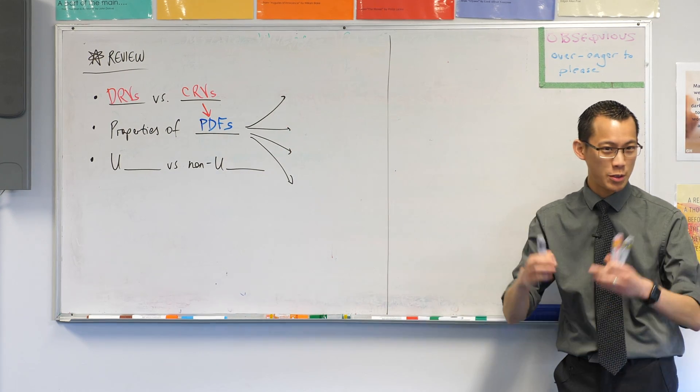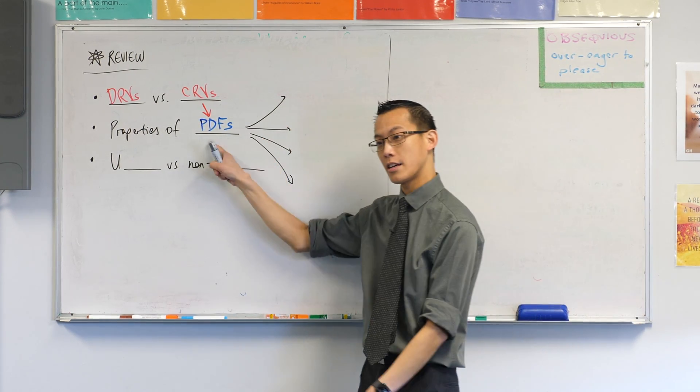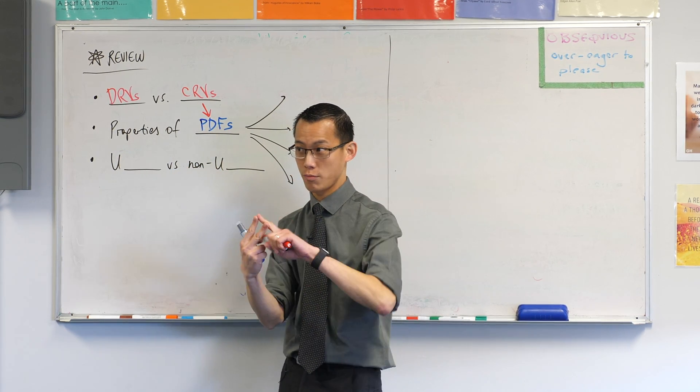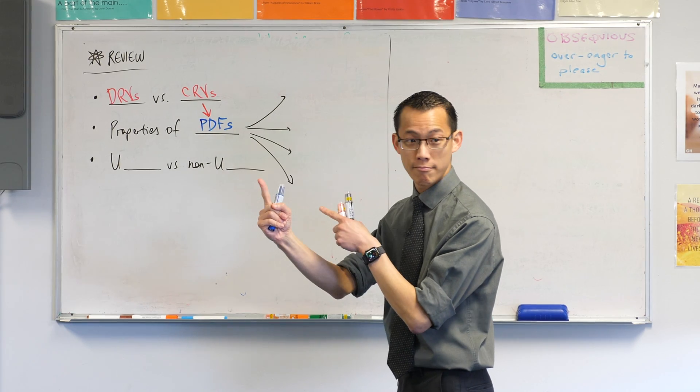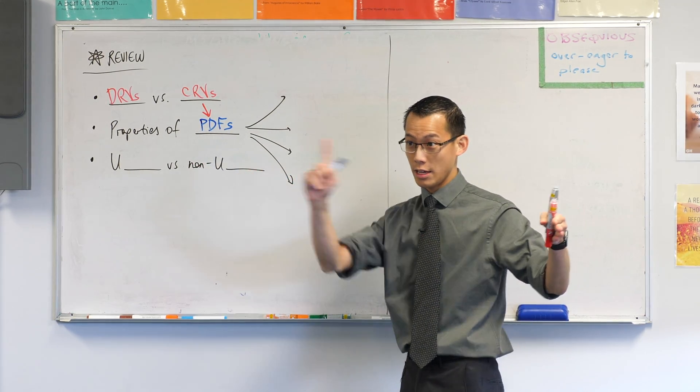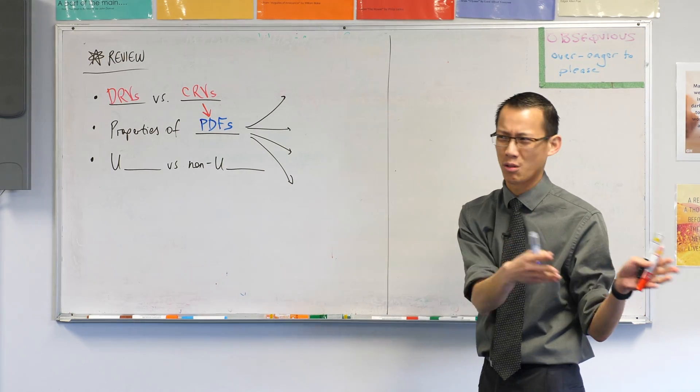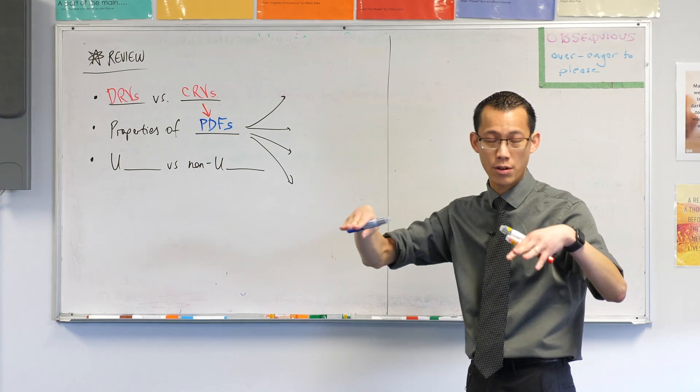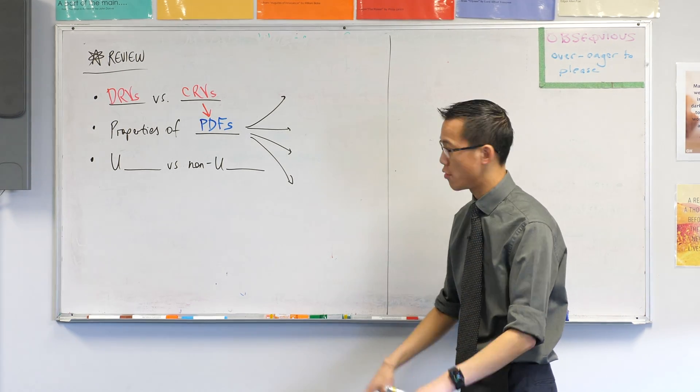Very good. On these continuous random variables we said, okay, the name of the game is these particular functions here. And we looked at their properties, namely two of them. What are the two properties that every probability density function has? Number one. If you add up the area underneath, it equals one. And then there's the other one, which we don't look at very much, but yeah, the probabilities have to be positive, right? Or zero is fine, but you can't have negative probabilities.